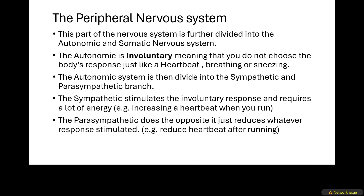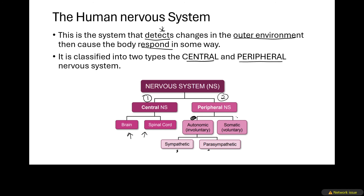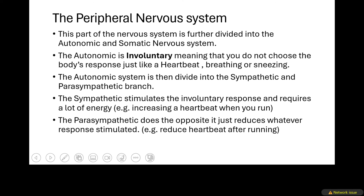The peripheral nervous system is further divided into the autonomic as well as the somatic nervous system. The autonomic nervous system is an involuntary system, meaning it does not depend on your choice for the body to respond. For example, heartbeat, breathing, and sneezing — you do not choose when to breathe or sneeze, and you do not choose how fast your heart beats. Those are involuntary actions.